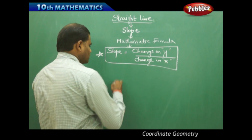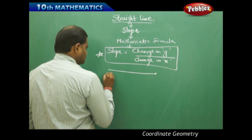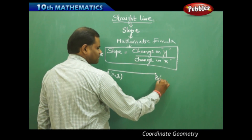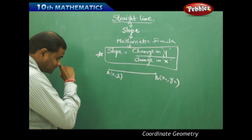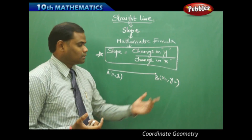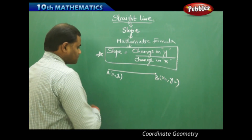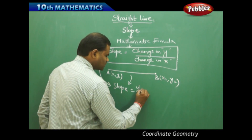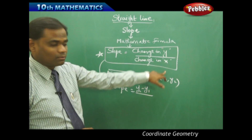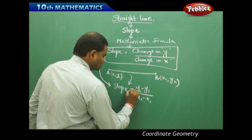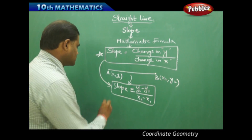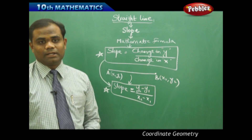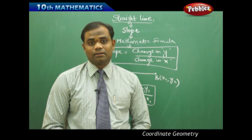Therefore, if we have a line with two points A and B, where A has coordinates x1, y1 and B has coordinates x2, y2, then the change in y is y2 minus y1 and the change in x is x2 minus x1. So the slope of this straight line is given by the formula: slope equals y2 minus y1 divided by x2 minus x1. When two coordinates are given, we can find the slope using this formula.